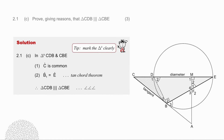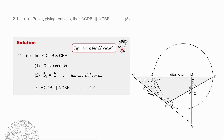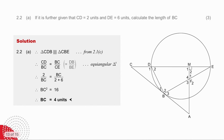The next question asks you to prove that triangle CDB is similar to triangle CBE. Angle C is common. Angle B1 is equal to angle E because of the tan-chord theorem. Therefore the two triangles are similar by angle-angle-angle. Whenever you prove two triangles similar and have questions that follow, write the ratios down: CD over BC equals BC over CE equals DB over BE.